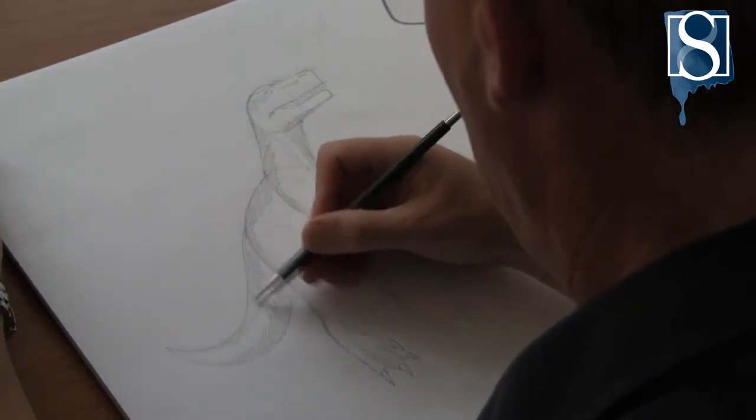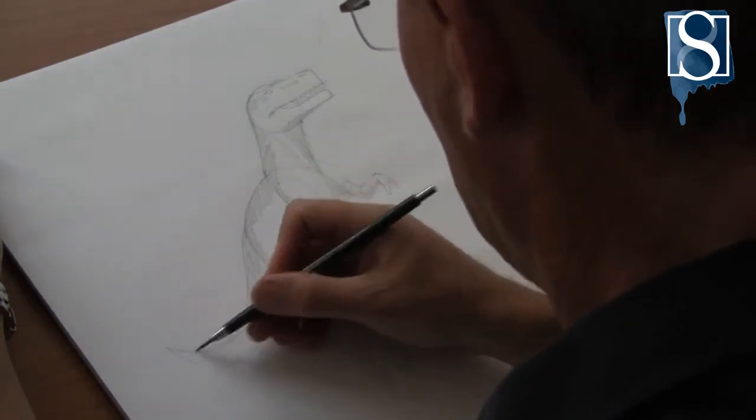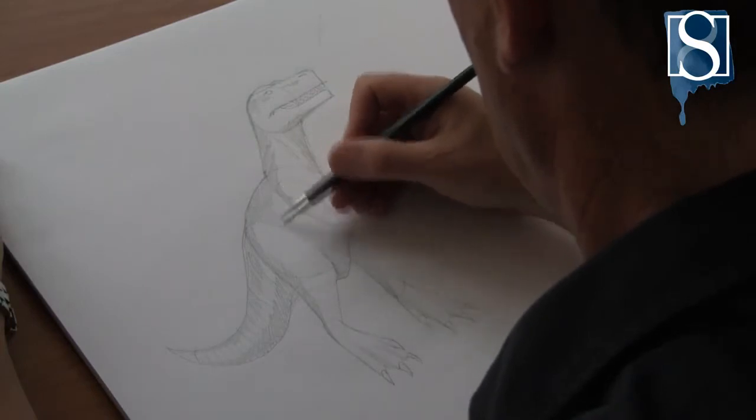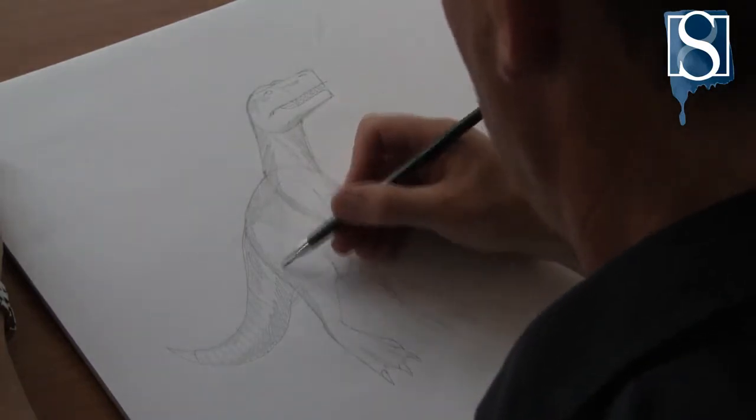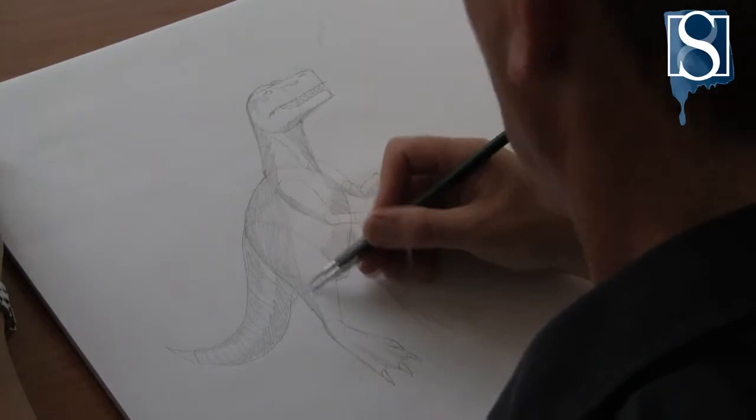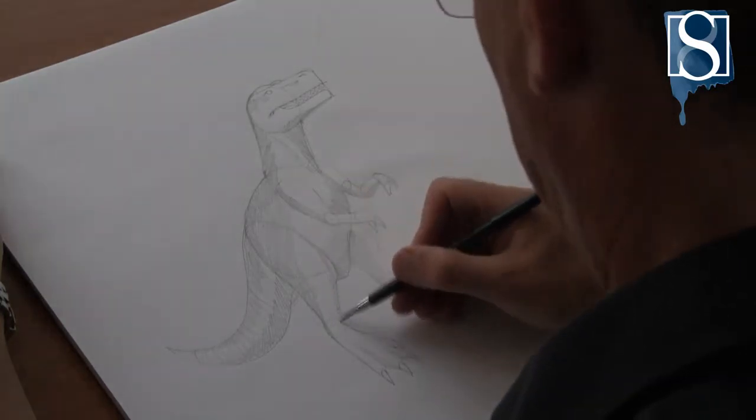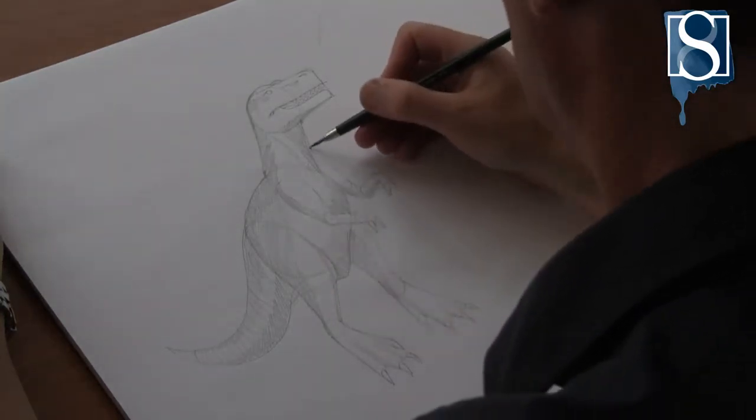Now add some lines to show the structure of the tail. Add some more tone. Now start to add some definition to the features.